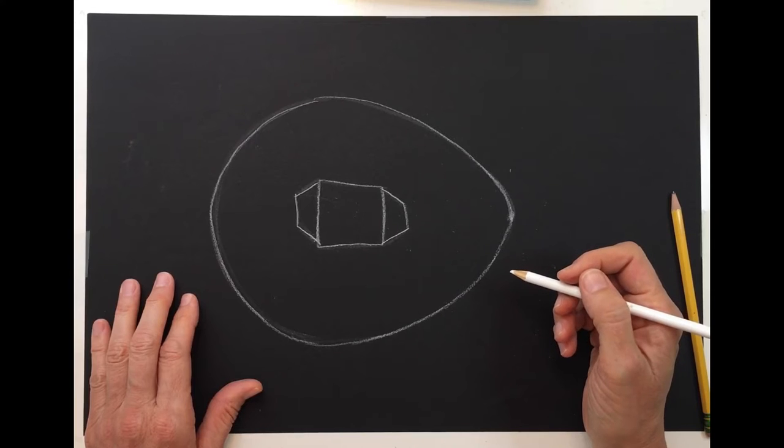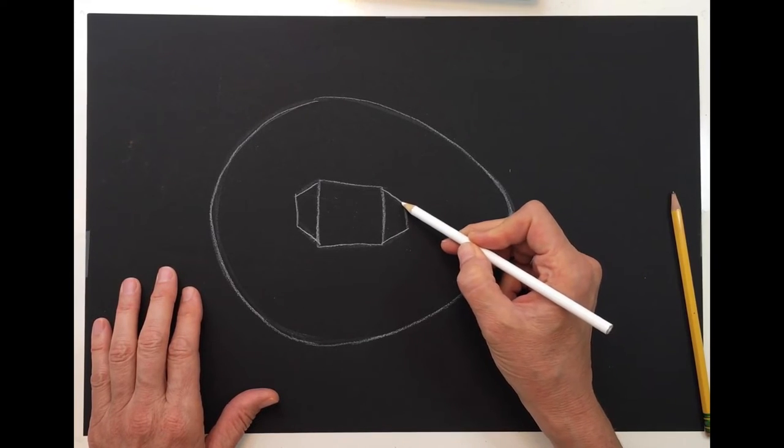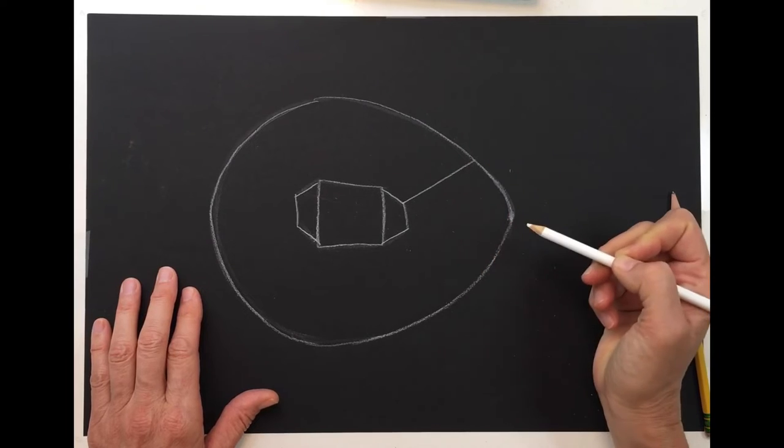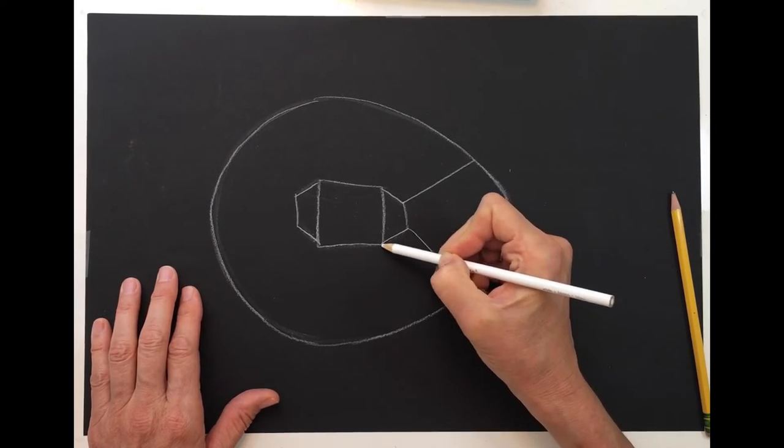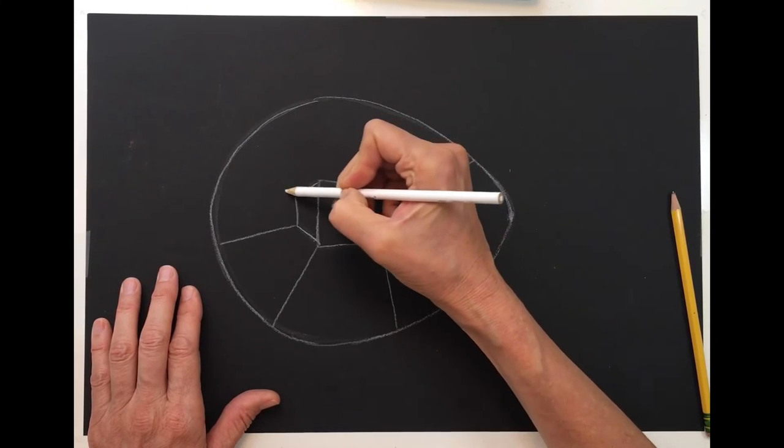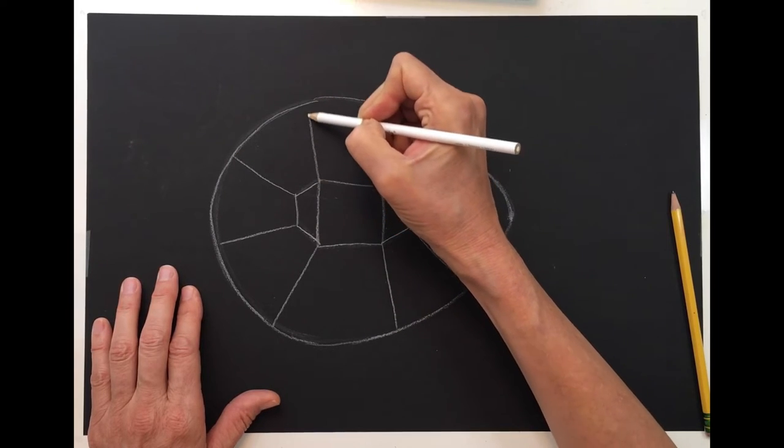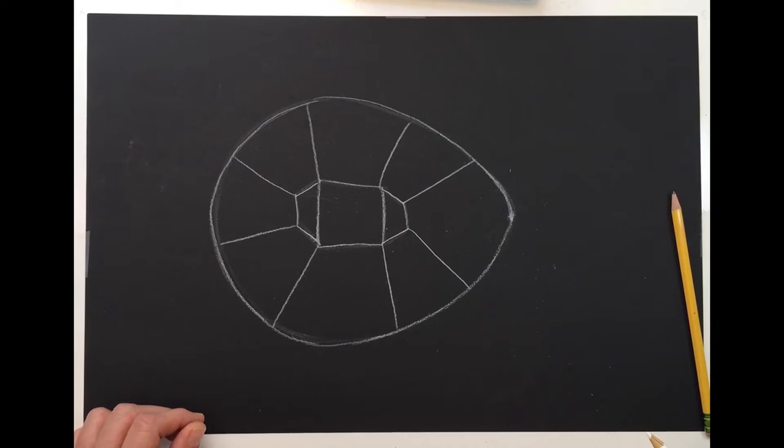And then the last step, you're going to take and just connect these. So now I have the center of the shell of my turtle. And now in this next step, I'm going to start to take and just go to each of the points. So I find one of the points, and I'm going to draw a line out. So I go to each corner, draw a line. And I'm going to angle them out. And you see how it instantly gave me a turtle shell. Isn't that cool?